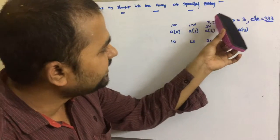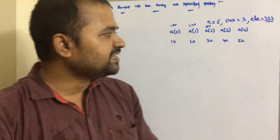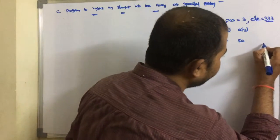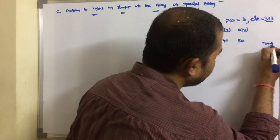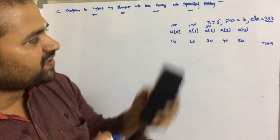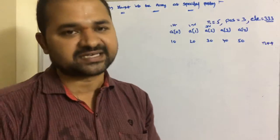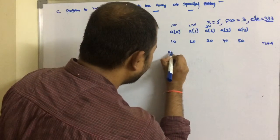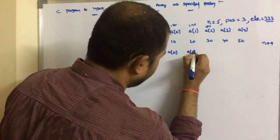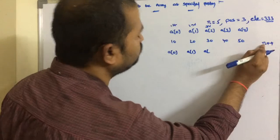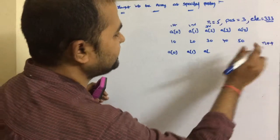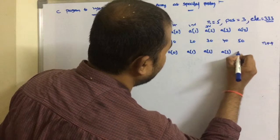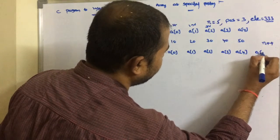Initially the size of the array is 5, but after inserting an element, the size becomes 6. So the first operation is n plus plus — n goes from 5 to 6. Now we can have 6 elements from a[0] to a[5], because 6 minus 1 equals 5.